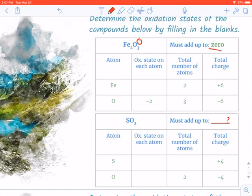I've already given you everything except for the oxidation state of each individual iron, so that's the part you're filling out here. Because they need to add up to zero, we know that each oxygen is negative 2. If there are 3 oxygen atoms, as indicated by the little 3 right there, you multiply negative 2 times 3 and get negative 6.